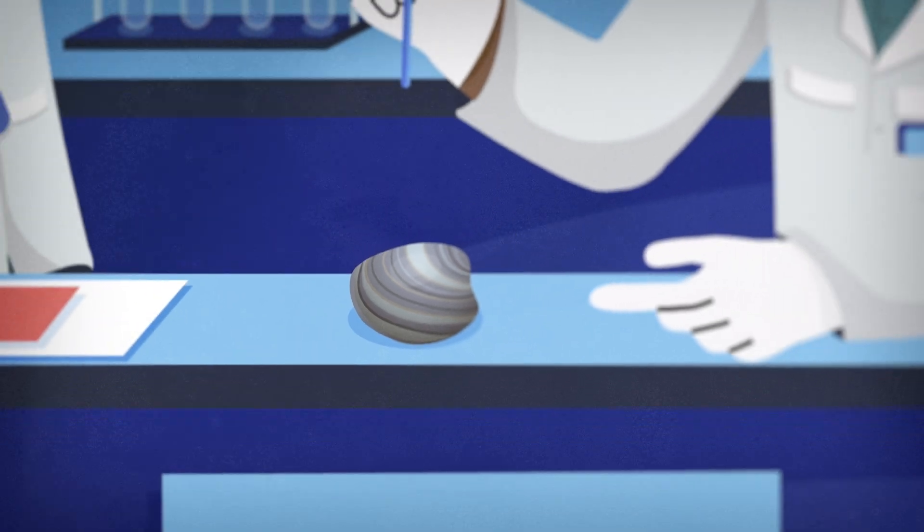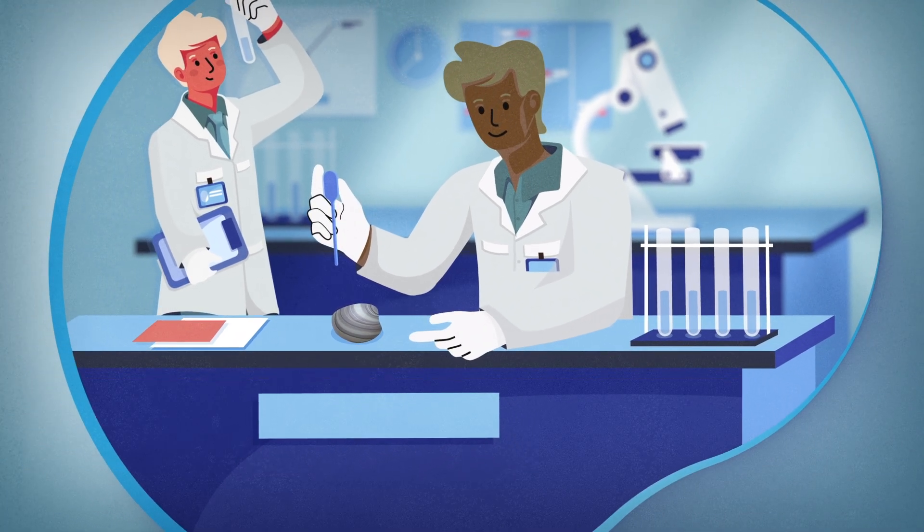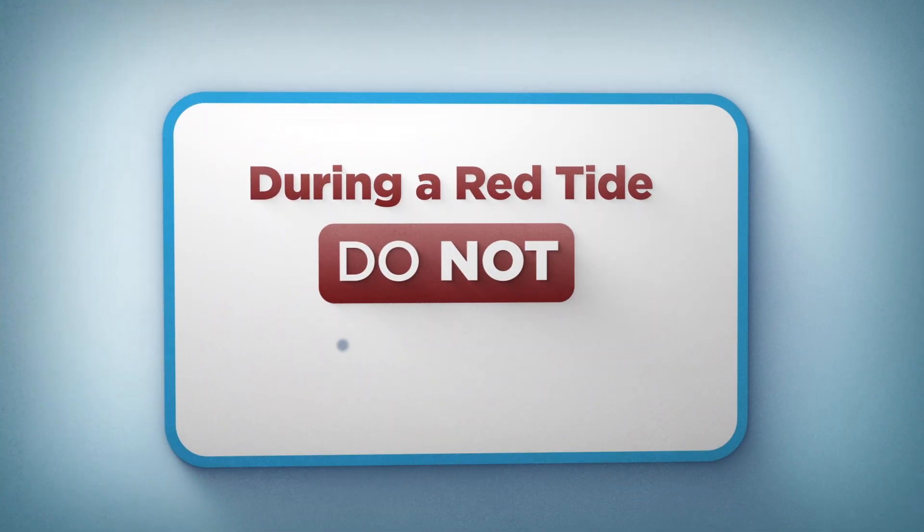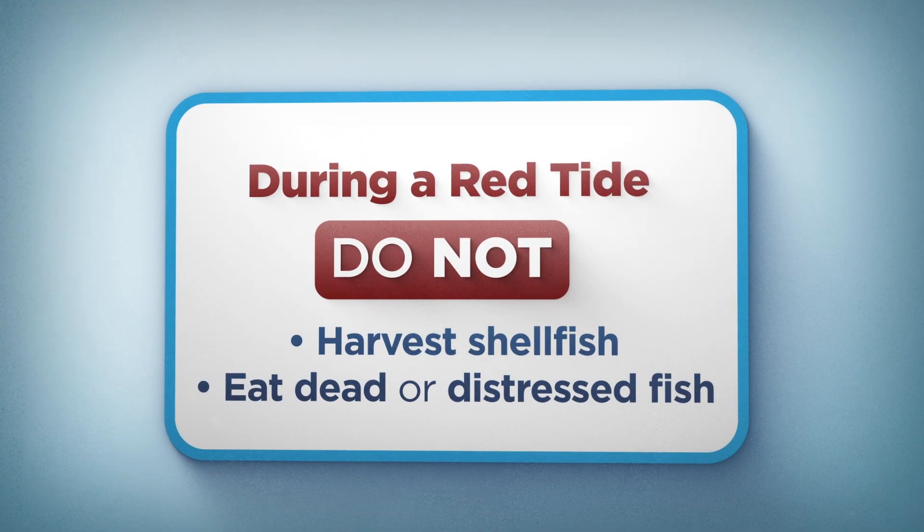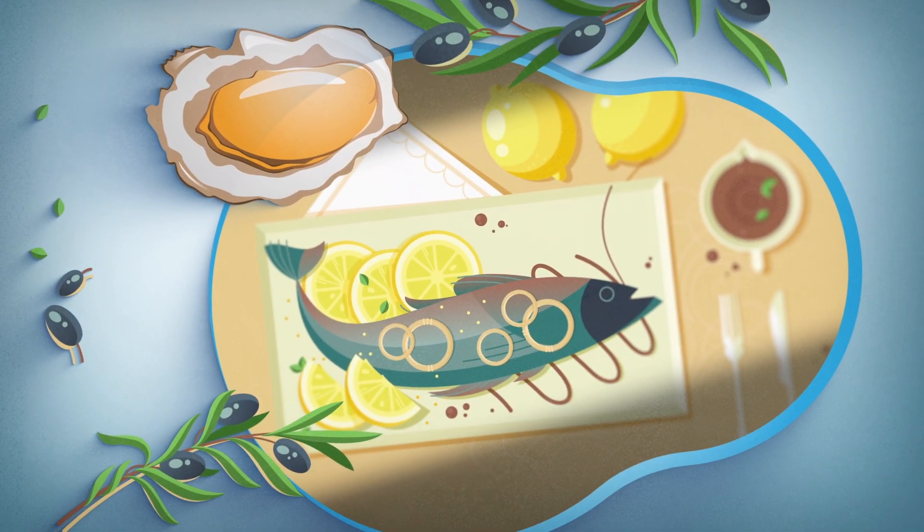Red tide toxins also accumulate in shellfish such as oysters and clams, which if consumed can lead to neurotoxic shellfish poisoning. During a red tide, don't harvest shellfish or eat dead or distressed fish. However, shellfish sold from restaurants and grocers is safe.